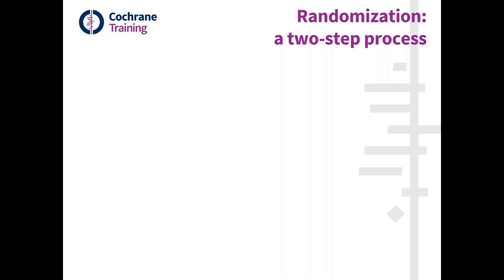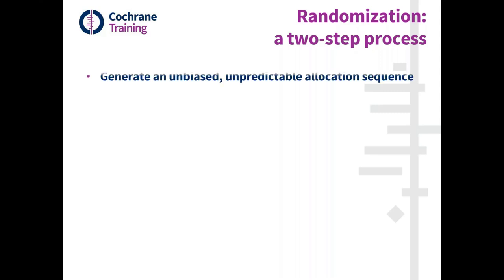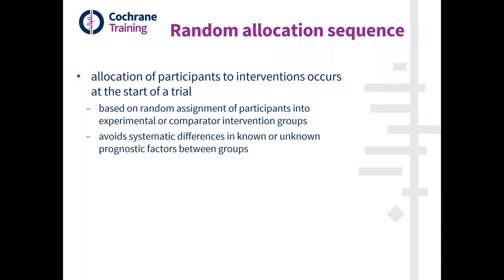In a trial, randomisation is a two-step process. We first generate an unbiased, unpredictable allocation sequence which has an element of chance. Subsequently, the allocation sequence must be concealed from participants and trial personnel until after recruitment has been confirmed. The first step is generating the allocation sequence to randomly assign participants into experimental or comparative intervention groups, with the aim of generating intervention groups that have the same prognosis before the start of intervention.